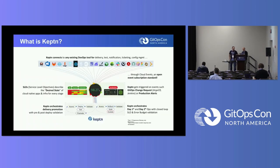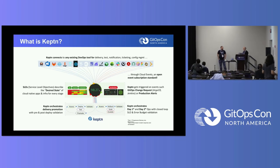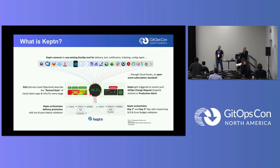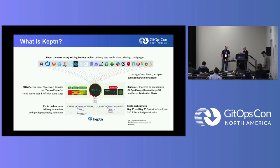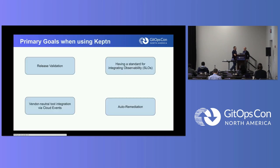First, I want to describe what Keptn is. Keptn is a tool which should help you keep your deployment stable and your application stable. It does this by putting data or service level objectives in the middle of your process, helping you integrate different tools, and controls everything in your process.